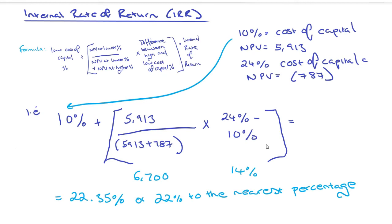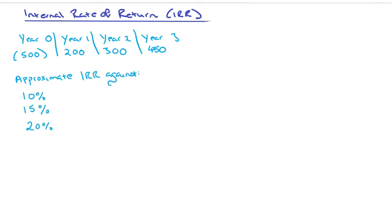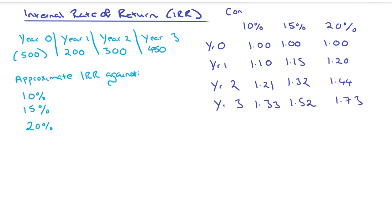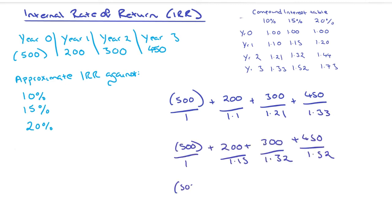One final example: if the exam asks to approximate the internal rate of return against 10%, 15%, and 20%, and I've got a net present value table showing my investment of £500 in year zero and the present value in years one, two, and three. First, I create a compound interest table showing 10%, 15%, and 20% and what they would be each year. In year one you've got 1.1 if it was 10%, in year two we'd add another 10%, year three another 10%. We take the 500 and divide it by one in year zero, then add 200 divided by 1.1, plus 300 divided by 1.21 in year two, and 450 divided by 1.33 in year three. Do that for every one of those percentages.